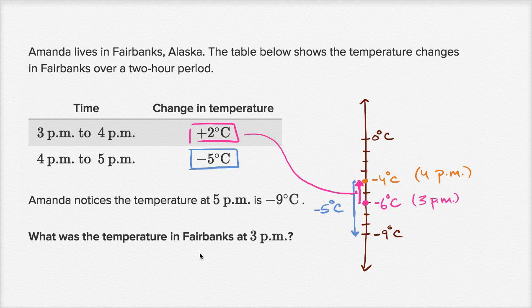So what was the temperature in Fairbanks at 3 p.m.? It was negative six degrees Celsius. And you can verify that: if you start at negative six, add two, you get to negative four, and then subtract five, you get to negative nine — which is exactly what we had.